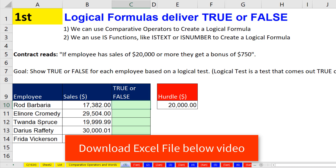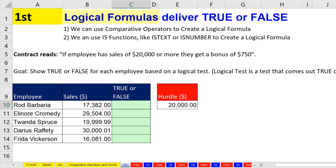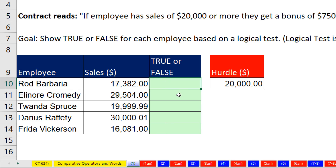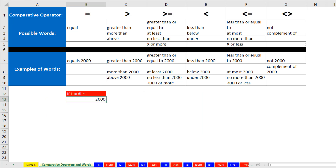Now before we use IF, we've got to talk about what a logical formula is. A logical formula simply delivers true or false. For our formula in this column, we want a formula that delivers true or false based on what the contract reads. It says if an employee has sales of $20,000 or more, they get a bonus of $750. Now for our formula in our first example, we don't want the zero and the $750; I just want to show true or false. Before we can build logical formulas, we've got to go over to the sheet of comparative operators.